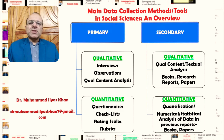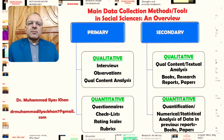Observation is another primary data collection tool used in qualitative studies. Generally there could be structured observations, but in qualitative studies we typically have less structured or unstructured observations. Then qualitative content analysis, which is something like thematic analysis, where we search for themes in qualitative, generally textual or pictorial, data.